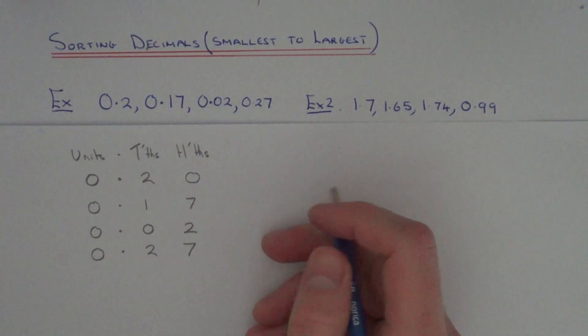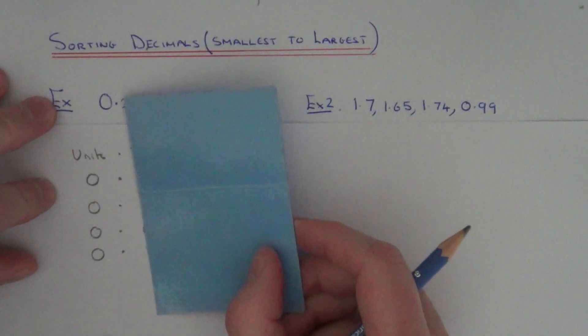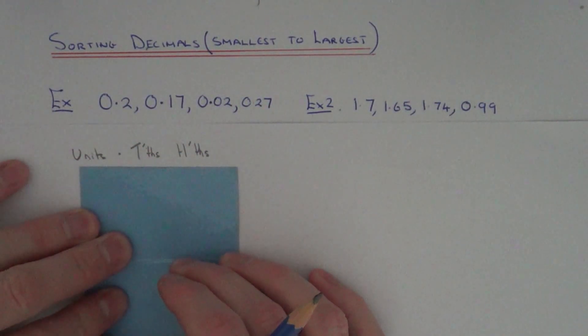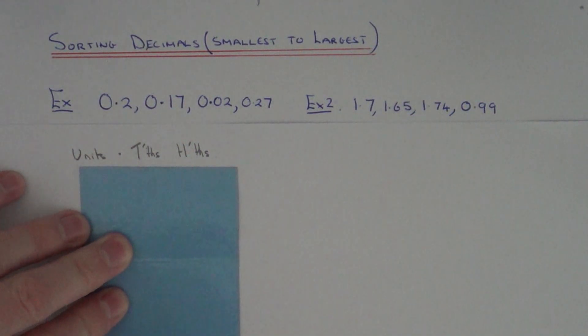So once you've done that, if you get yourself a piece of card, we're going to move the card from left to right, because the important columns are on the left hand side, so we must check those first. And the less important columns are to the right.